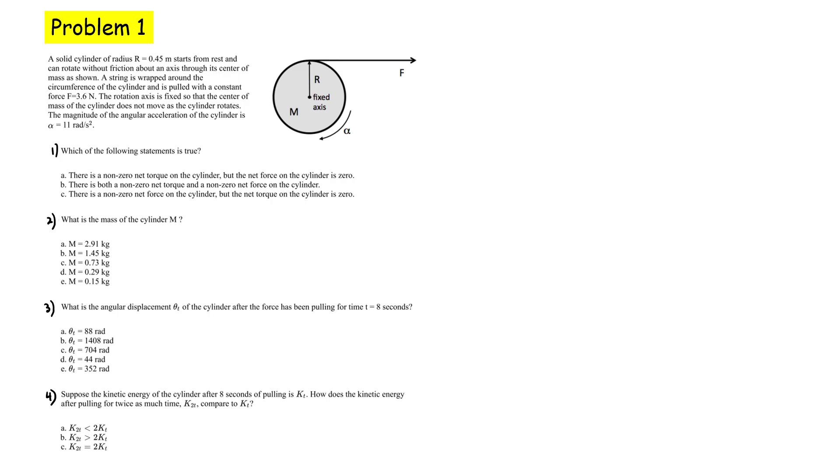Here's problem one. We have a solid cylinder that has a radius R. It starts from rest and can rotate without friction about an axis through its center of mass as shown. We have a string that's wrapped around it and this force here from the tension is 3.6 newtons. It's being pulled with a constant force. The rotation axis is fixed so that the center of mass does not move as the cylinder rotates. So it's a fixed axis problem. Also, the magnitude of the angular acceleration is given.